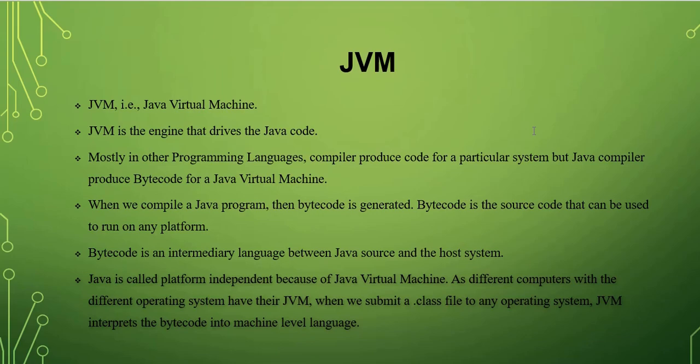Different computers with different operating systems have their own JVM. When we submit a .class file — that is the bytecode — to any operating system, the JVM interprets the bytecode into machine level language. What are the translators used in Java? Both compiler and interpreter are used.